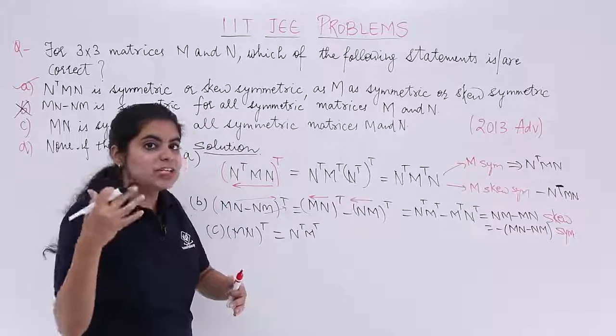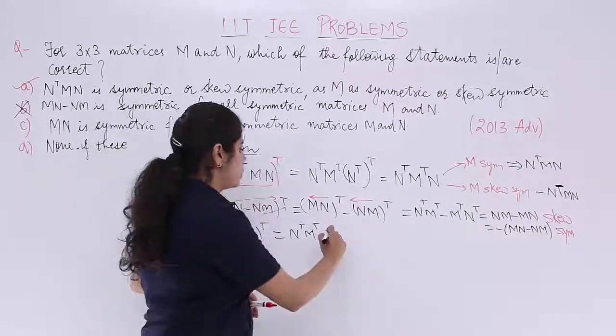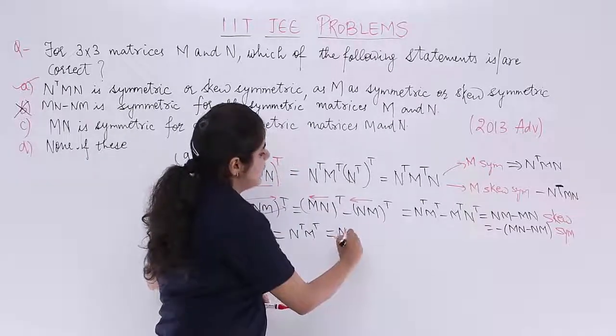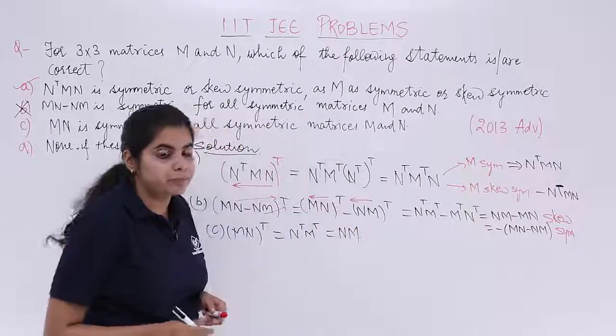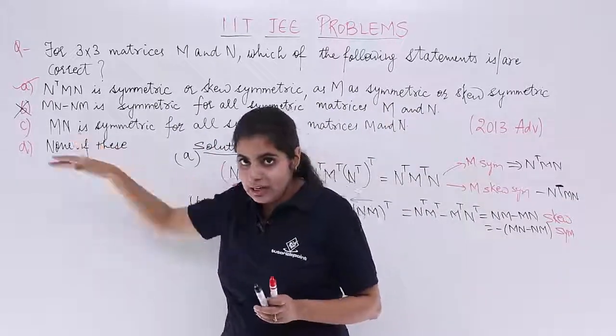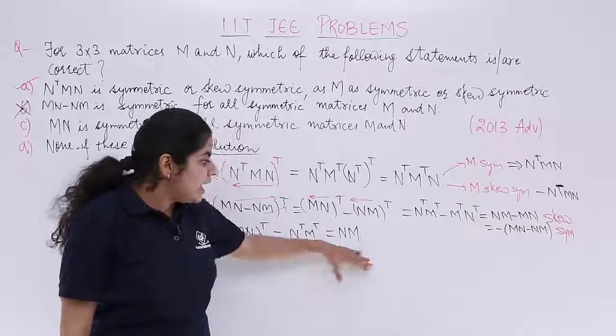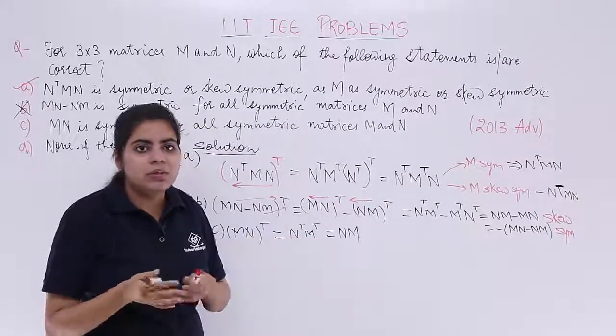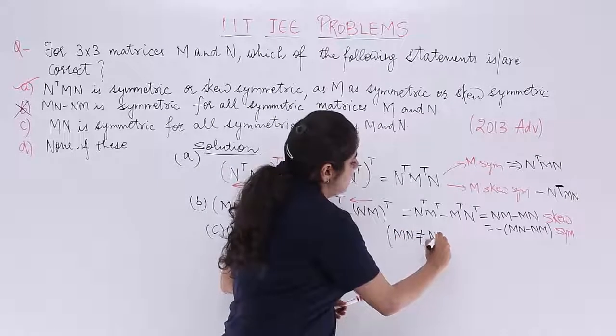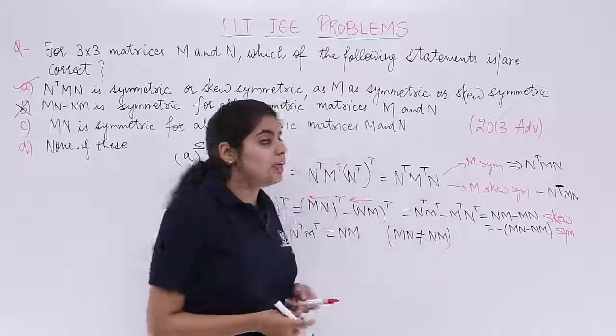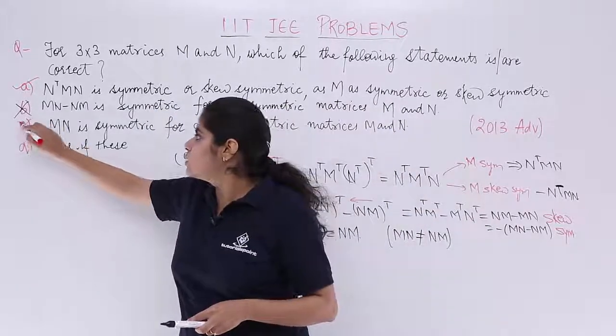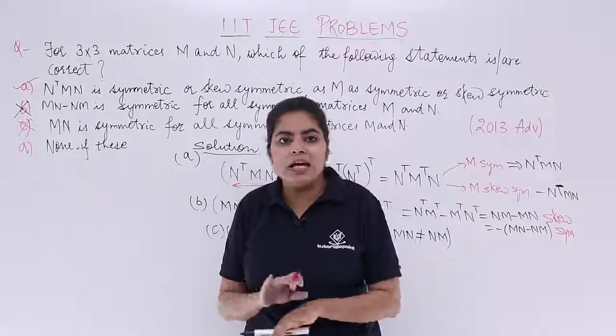MN whole transpose, again reversal order. Reversal order says N transpose M transpose. And the matrix transpose is equal to matrix itself. For symmetric matrices N transpose is equal to N, M transpose is equal to M. What was given to me? Given to me was MN. What we have got? NM. Are these equal? No, they are not. That means MN is not equal to NM and since these are not equal, my third option goes incorrect. So B and C are incorrect.